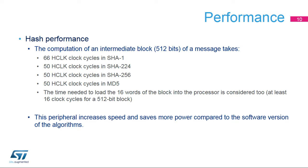These are the times it takes to process a single block of data, depending on the chosen algorithms. HCLK is the CPU clock and can go as high as 216 MHz.